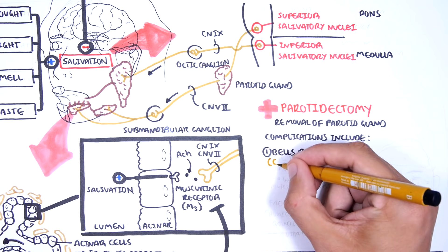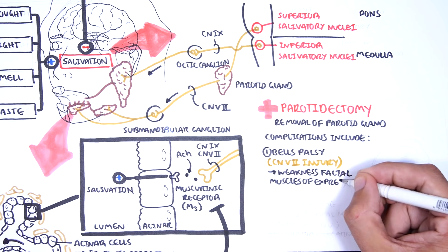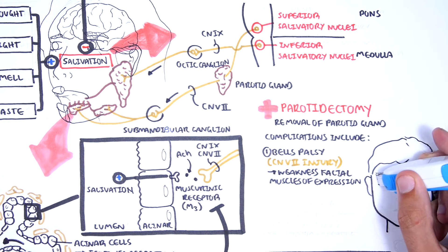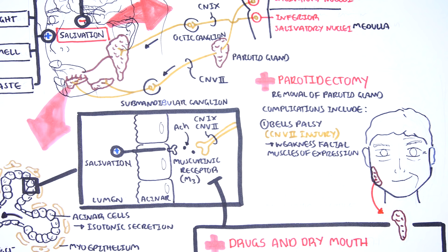This is caused by cranial nerve 7, the facial nerve injury, during the operation. Injury to the facial nerve on the affected side causes weakness of the muscles of facial expression. Remember, cranial nerve 7 passes through the parotid gland, and anatomically the parotid gland is divided into the deep and superficial lobes which are separated by the facial nerve.